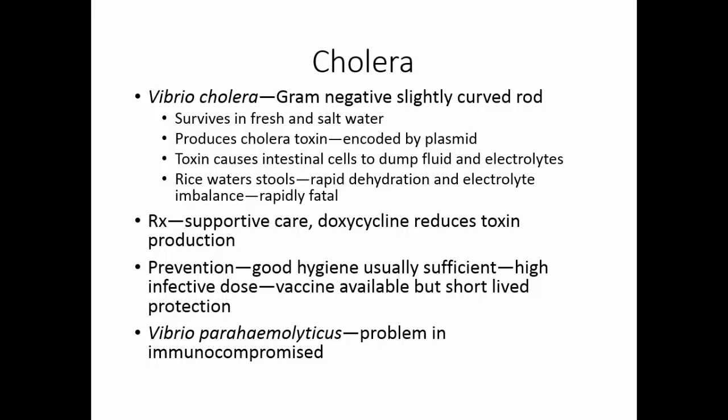Vibrio parahaemolyticus is another species of Vibrio. For most people, this organism is not pathogenic. It can live in alkaline salt waters and is found in Gulf Coast waters. Oysters are filter feeders, so whatever is in the water ends up in the oyster. For individuals with a healthy immune system, eating oysters containing Vibrio parahaemolyticus should not cause a problem. However, immunocompromised individuals who eat contaminated raw oysters can get very sick and even die.